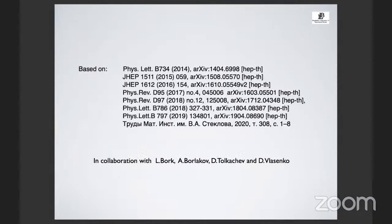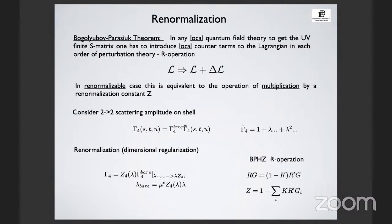My talk is based on a series of papers with my co-authors, devoted to the derivation and analysis of these relations. I will report today several results which are not yet published but are on the way. Let me start with the renormalization procedure. We introduce some counterterms and then look for the Green function. But in what follows, I will not look simply at the Green function—I will look at the amplitude on shell. It is enough to have finite amplitudes on shell rather than the absolute Green function. My object will be the on-shell scattering amplitude.